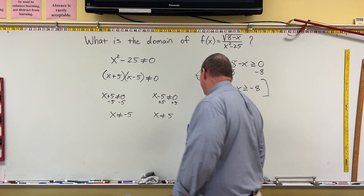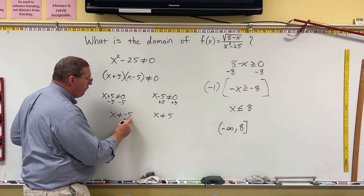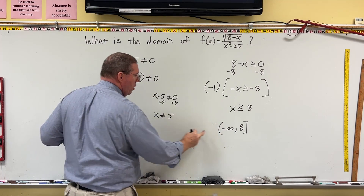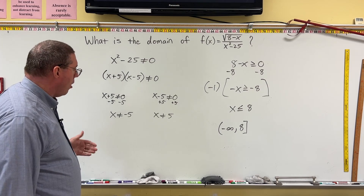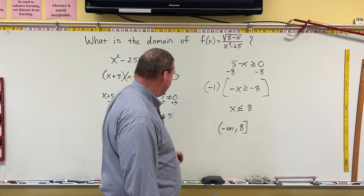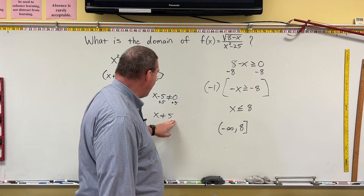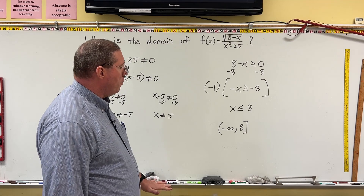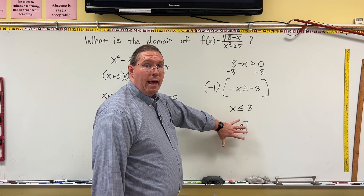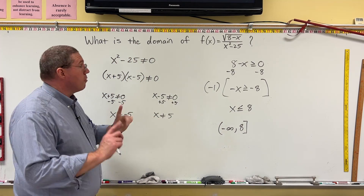Now we have to ask: are negative 5 and 5 on this interval from negative infinity to 8? It turns out they are. Negative 5 is between negative infinity and positive 8 because it's a negative number, and 5 is smaller than 8. So we have to rewrite this interval and remove negative 5 and 5.